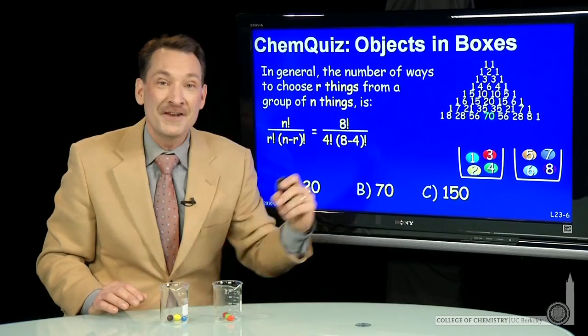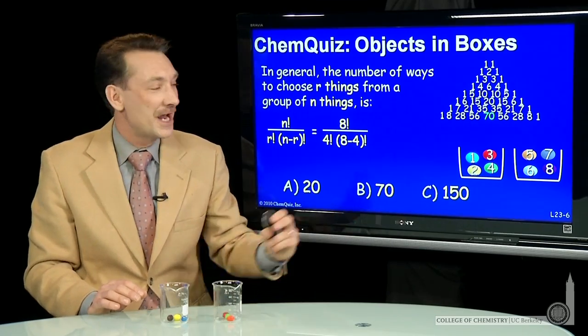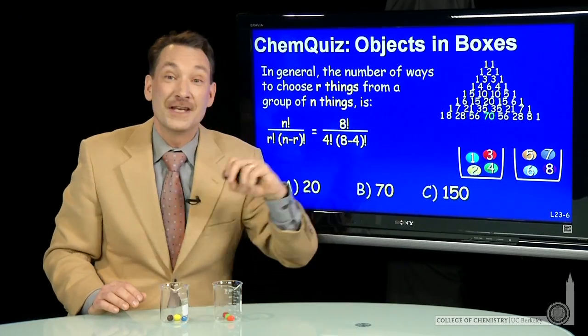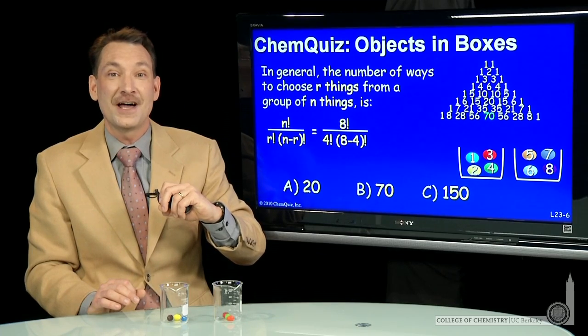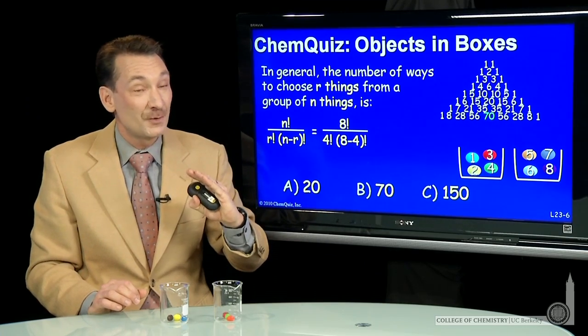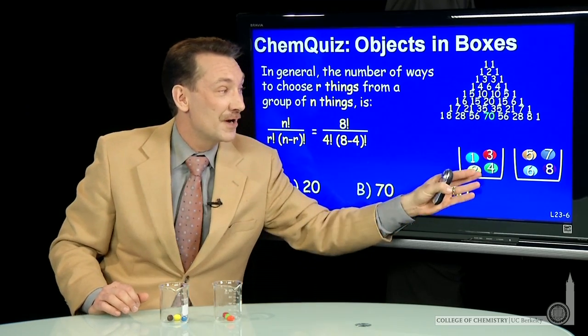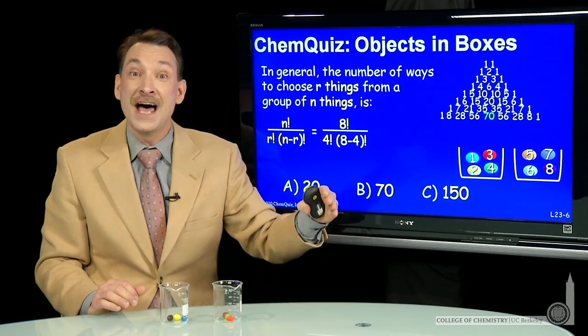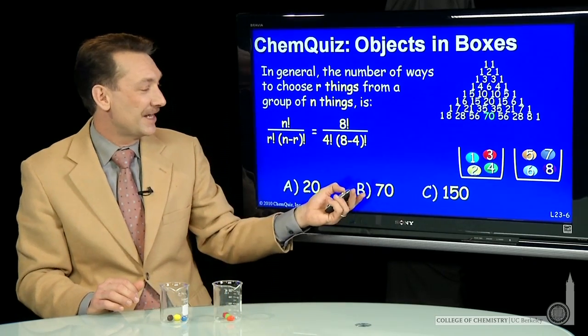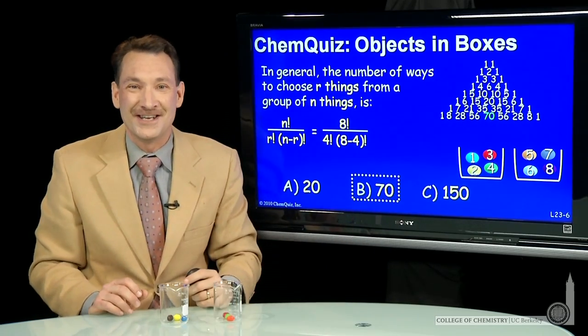So there's 70 ways to arrange this system with an equal number of particles on each side. It's 70 times more likely for the particles to be arranged like this than all on one side. So the correct answer here is B, 70.